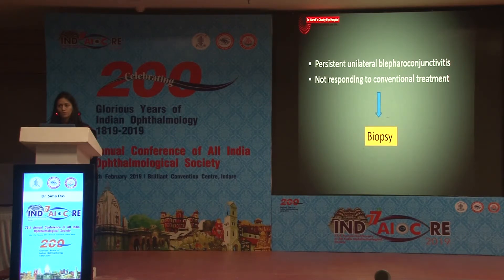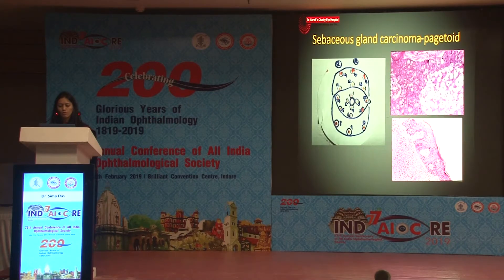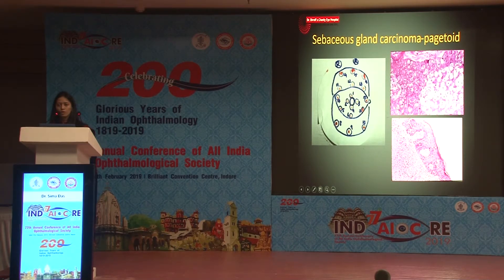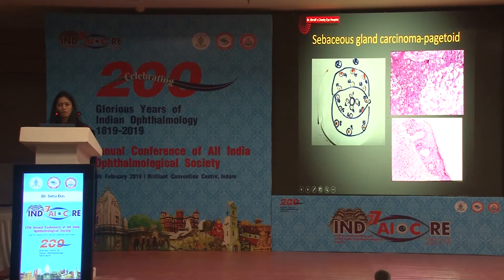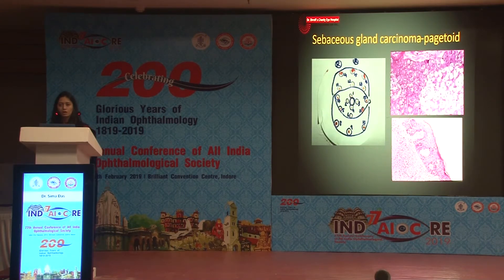To biopsy this diffuse pagetoid lesion, we use MAP biopsy — since there is no single nodule for biopsy, we biopsy the whole involved ocular surface. Multiple small bits of conjunctiva are taken from multiple sites, marked on a filter paper, and the same diagram is made on the OR sheet to correlate with histopathology findings and identify which area is positive. Each piece is processed separately by the pathologist, and the report indicates which numbered sites are positive, guiding treatment planning.